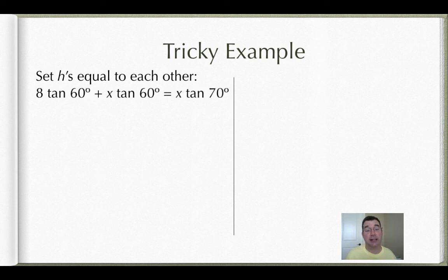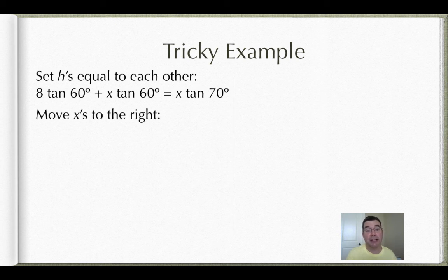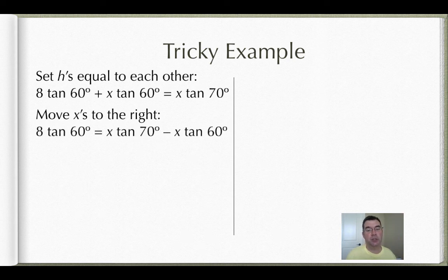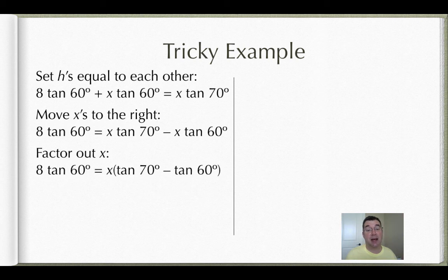So the first time, h was equal to 8 times the tangent of 60 plus x times the tangent of 60. And the second time, h was equal to x times the tangent of 70. So those are equal to each other. I'm going to move all the x's to the right. That means that my x tan 60 that's on the left needs to be subtracted. I'm solving for x, so I'm going to factor x out of everything that is on the right. So that gives me x times the tangent of 70 minus the tangent of 60.